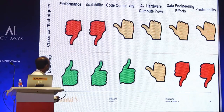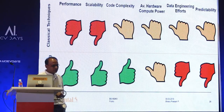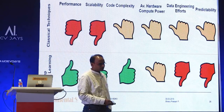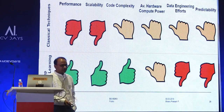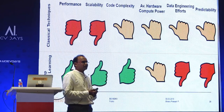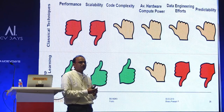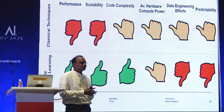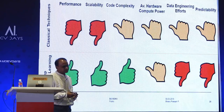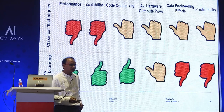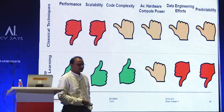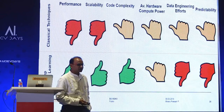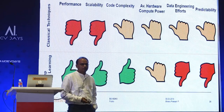To summarize: classic techniques have poor performance and poor scalability. Whereas deep machine learning has good performance, scalability, and handles complexity well. The drawbacks are predictability and data engineering — what model to use, what hyperparameters, what training and testing needs to be done. But effectively it performs well in other aspects, which is really useful for the autonomous driving problem.